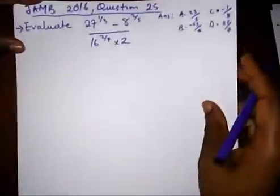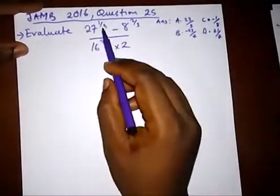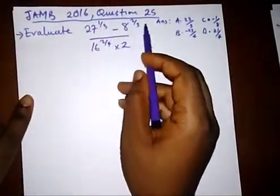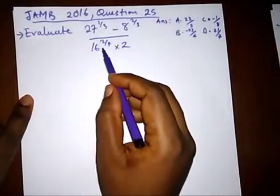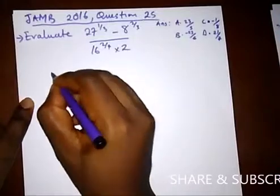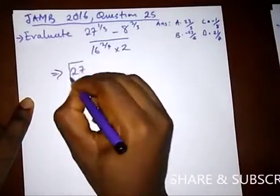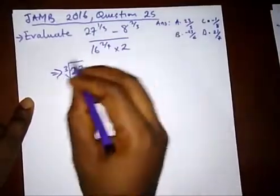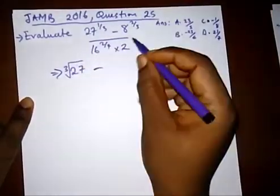The next question says evaluate 27 raised to power 1/3 minus 8 raised to power 2/3 divided by 16 raised to power 1/4 times 2. So what do we have?